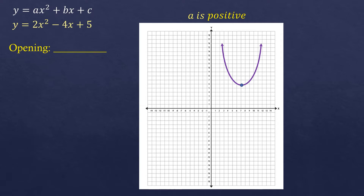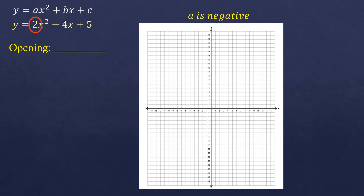If 'a', which is the coefficient of x squared, is negative, the graph opens downwards. We don't know where it is located, but we are sure it's opening downwards if 'a' is negative. Looking at our given, the 'a' here is positive 2, so it is positive. That means it opens upwards. We are sure our graph looks like this, and later on we will know where it is located.